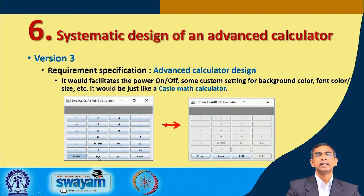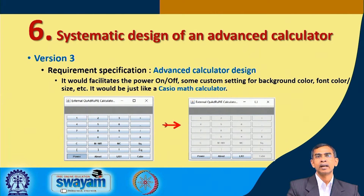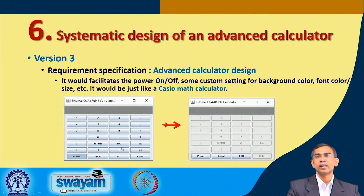Here you can see the different component styles. Suppose you want to change the background — the user can customize the background color, foreground color, font, font size, and orientation if you want to change the orientation, all of which you can allow using this feature.